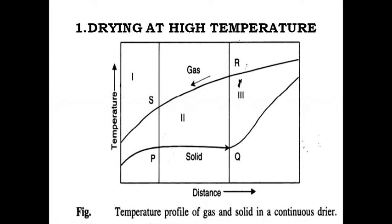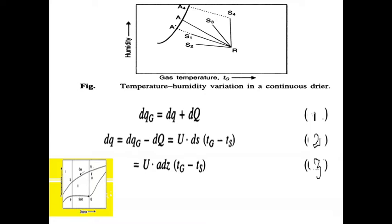It will be interesting to see how the gas temperature and humidity vary in zone two. Point capital R denotes the condition of air entering zone two. This figure shows the temperature-humidity variation in a continuous dryer. This graph plots gas temperature (Tg) on the x-axis and humidity (capital Y) on the y-axis.